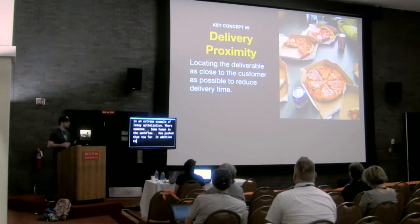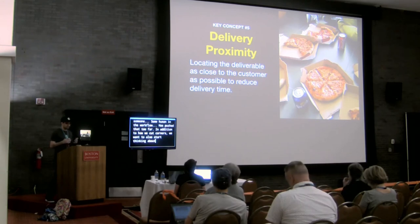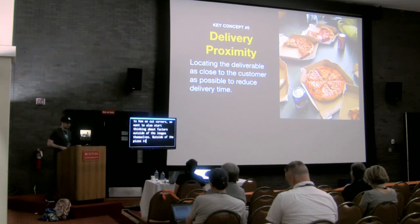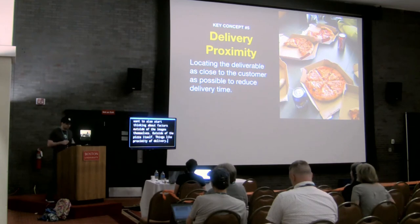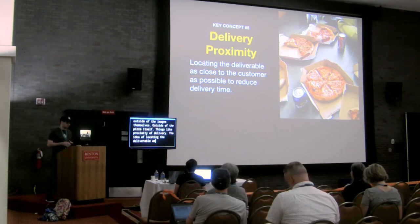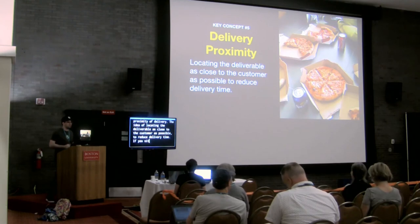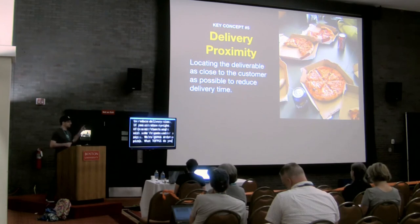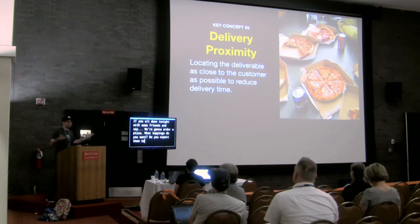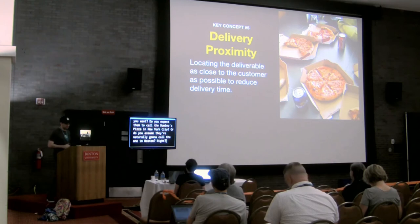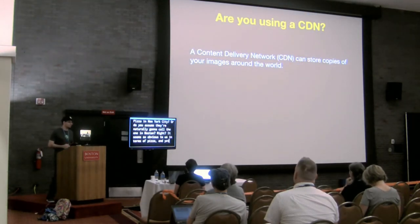In addition to how we cut corners, we want to also think about factors outside of the images themselves — outside of the pizza itself. Things like proximity of delivery: the idea of locating the deliverable as close to the customer as possible to reduce delivery time. If you sit down with friends and they say they're going to order pizza, do you expect them to call the Domino's in New York City? Or do you assume they'll naturally call the one in Boston? It seems so obvious to us in terms of pizza, and yet so few of us actually use content delivery networks.